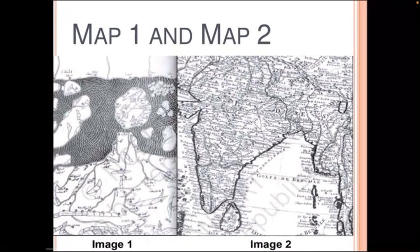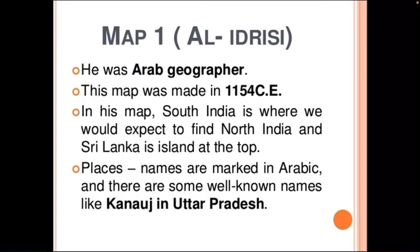Here we can see two maps — Map 1 and Map 2. Map 1 was made by Al-Adrissi, an Arab geographer. This map was made way back in 1154 CE. In that map, South India is where we would expect to find North India, and Sri Lanka is the island at the top. Places are marked in Arabic, and there are some well-known names like Kannauj in Uttar Pradesh.